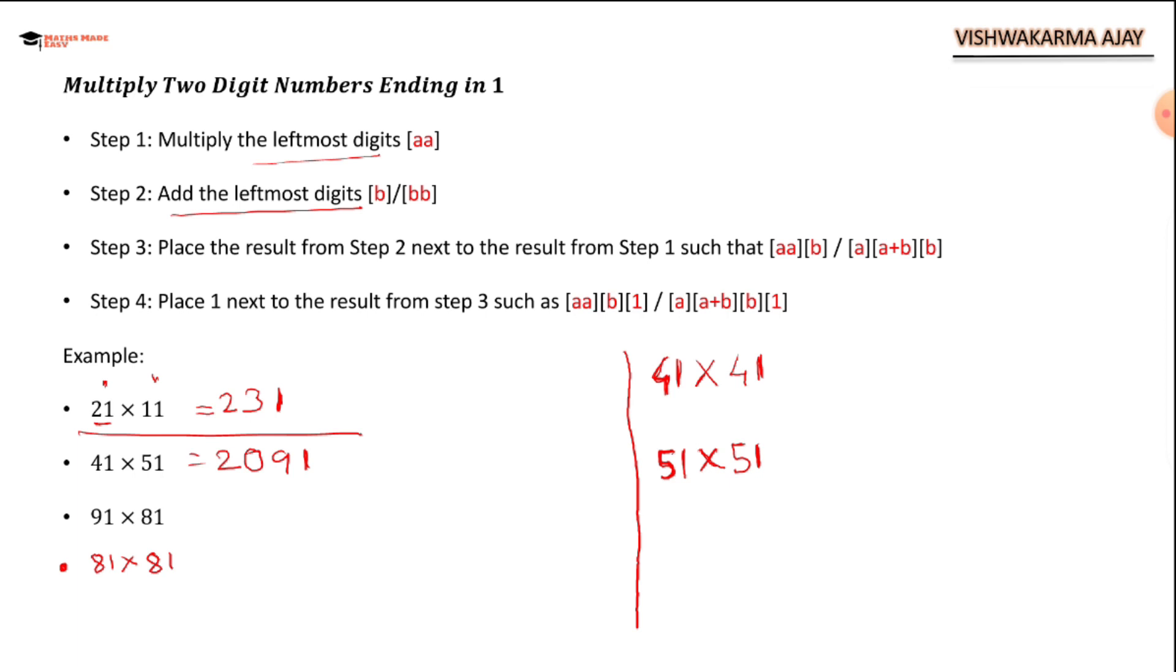91 times 81. 9 times 8 is 72. 8 plus 9 is 17. And I have to place one at the end.